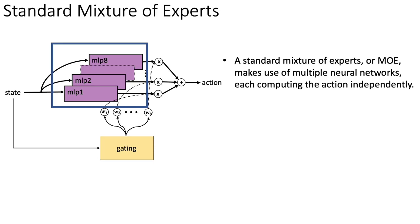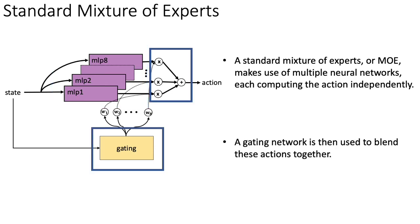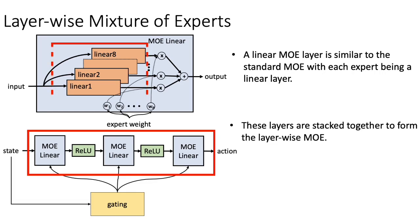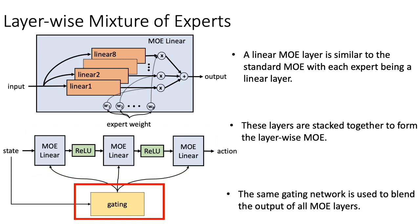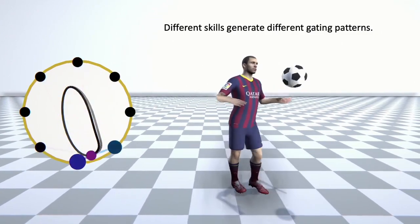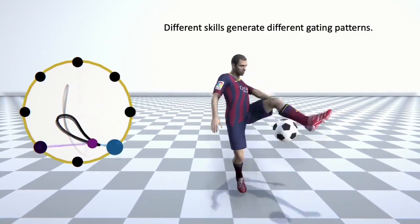A standard mixture of experts, or MoE, makes use of multiple neural networks, each computing the action independently. A gating network is then used to blend these actions together. A linear MoE layer is similar to the standard MoE, with each expert being a linear layer. These layers are stacked together to form the layer-wise MoE. The same gating network is used to blend the output of all MoE layers. In our multi-skill training, layer-wise MoE outperforms alternatives such as output MoE and multilayer perceptron. We observe that different skills generate different gating patterns with our layer-wise MoE architecture.